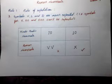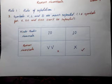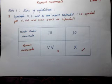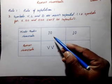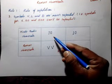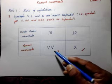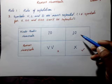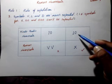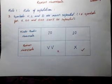The symbols V, L, and D are never repeated — meaning the symbols for 5, 50, and 500 cannot be repeated. For example, we cannot write 10 as V and V. We have to write 10 as X.